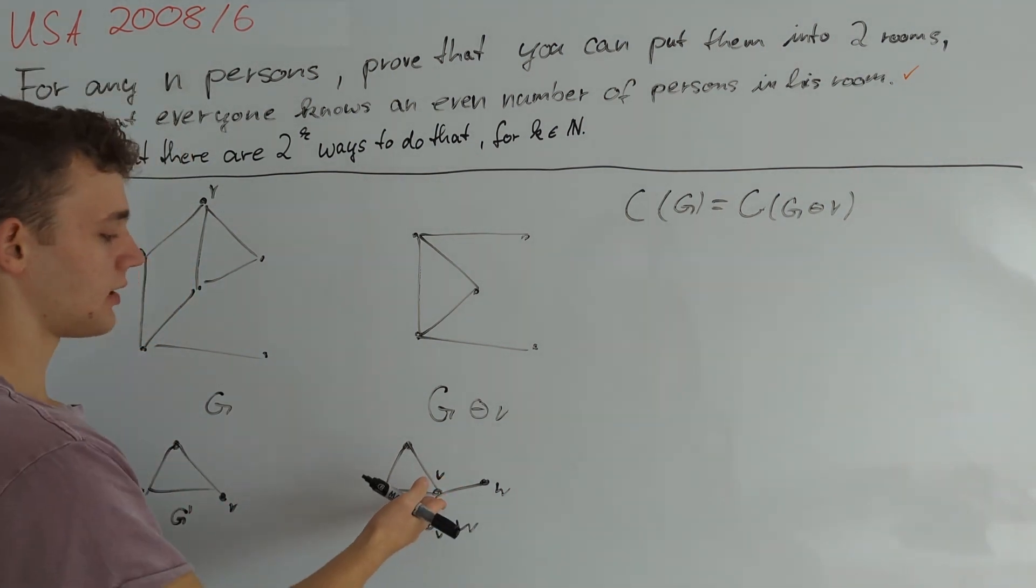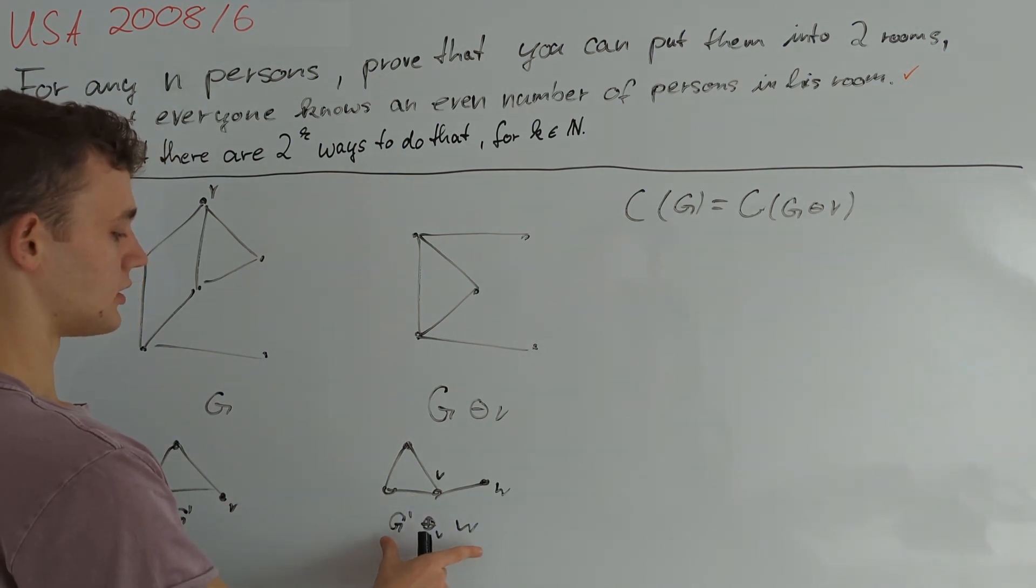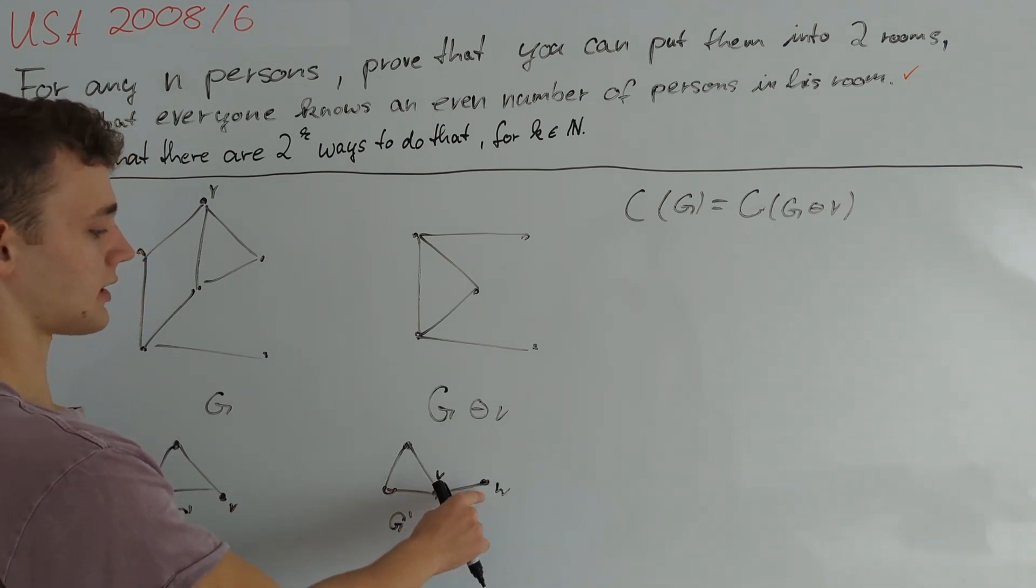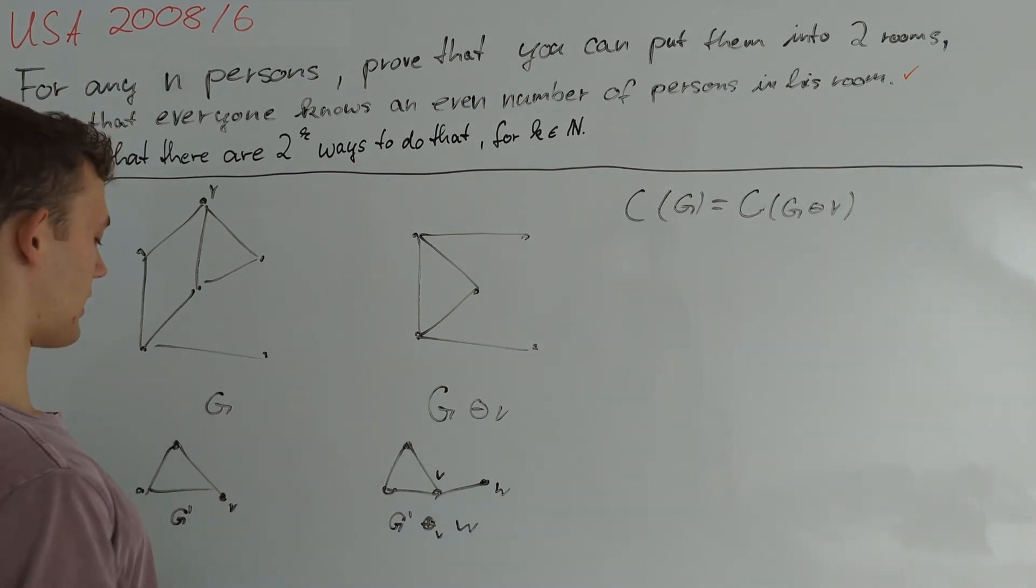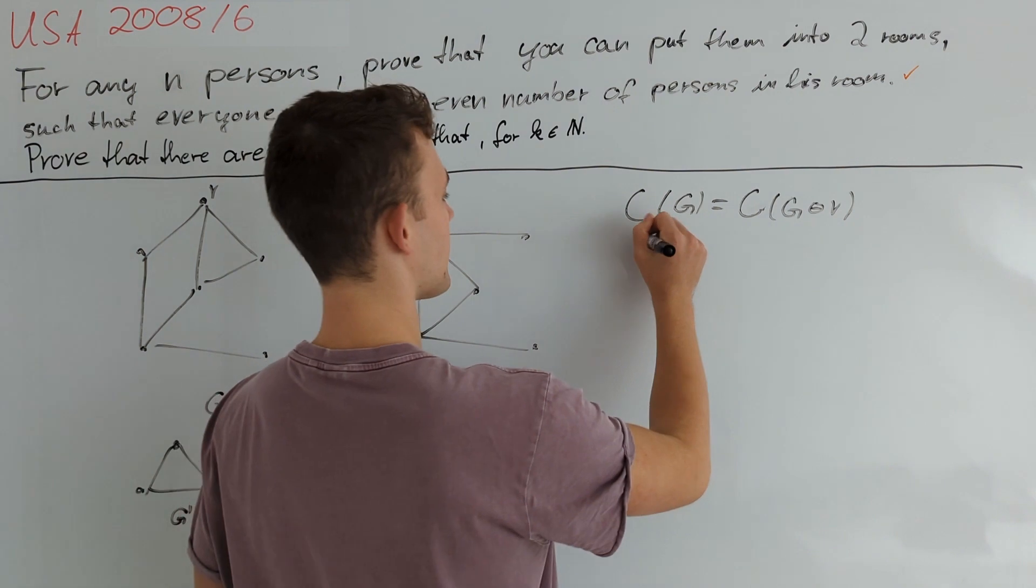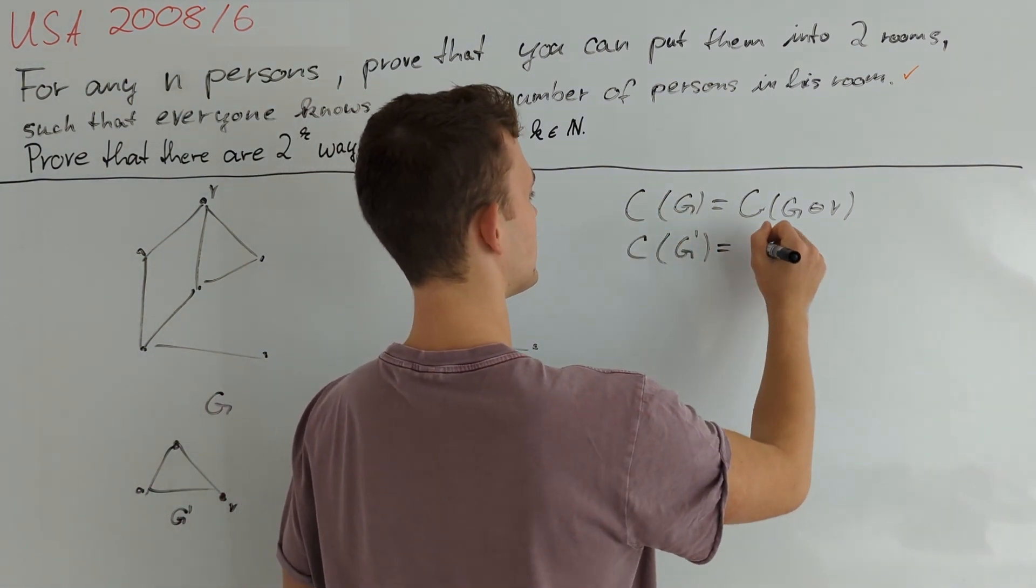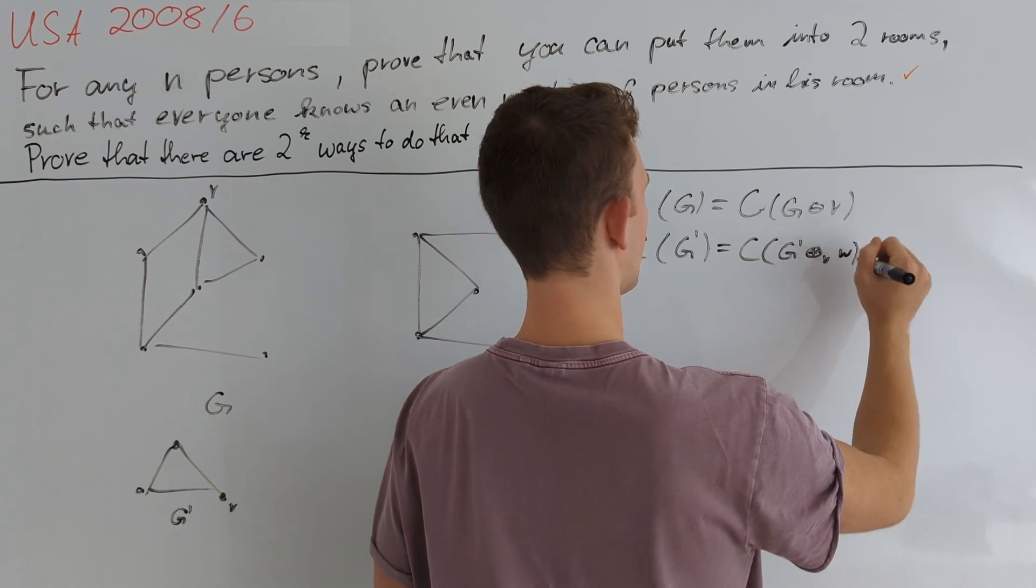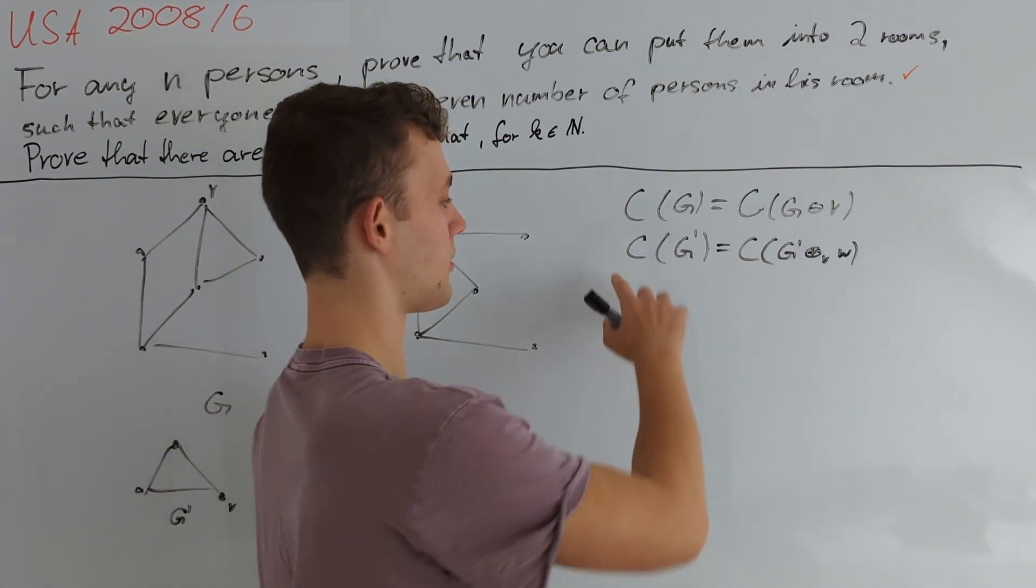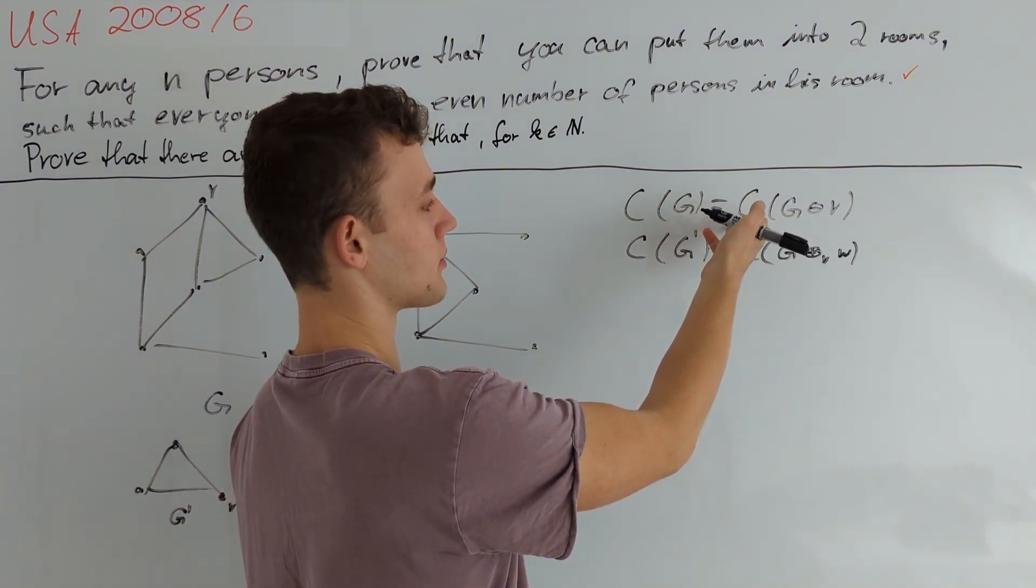Now it is clear that if we have any nice configuration in the graph G prime then we can just add W to the set where V does not lie in and get a nice configuration in G prime O plus subscript V of W. And in any nice configuration of that graph W must be in the set where V is not in because otherwise W would be of degree 1. So we can just remove W and get a nice configuration of G prime. So this is also a one-to-one mapping and we get that C(G prime) is equal to C(G prime O plus subscript V of W).